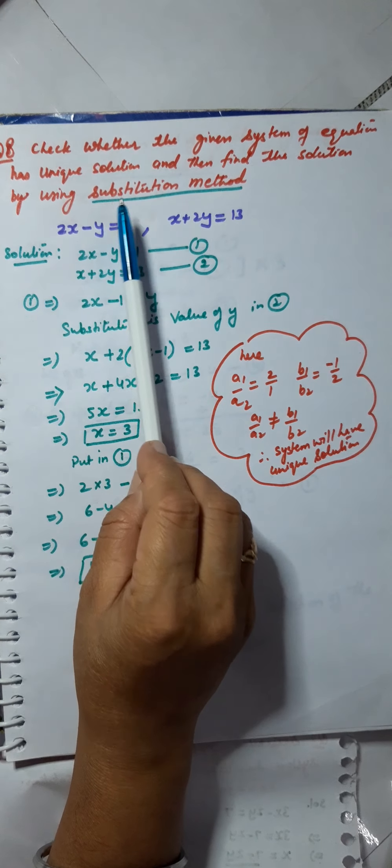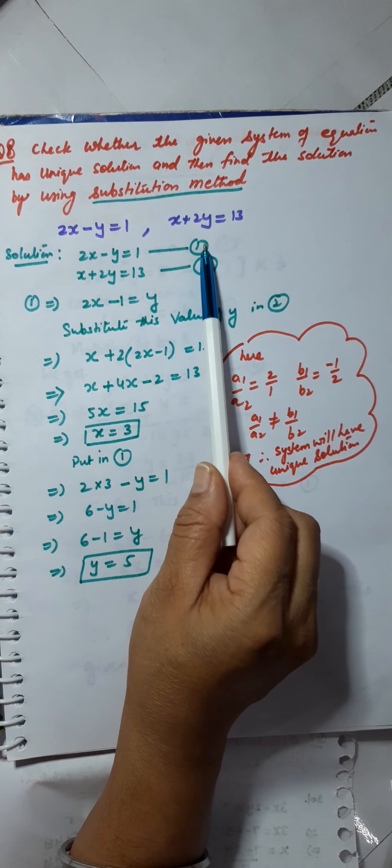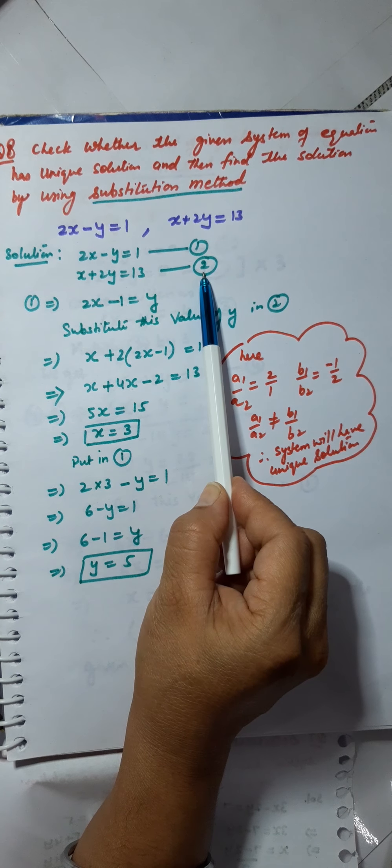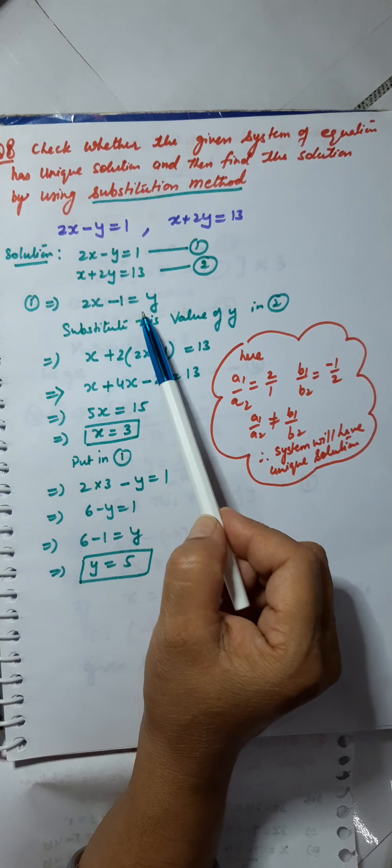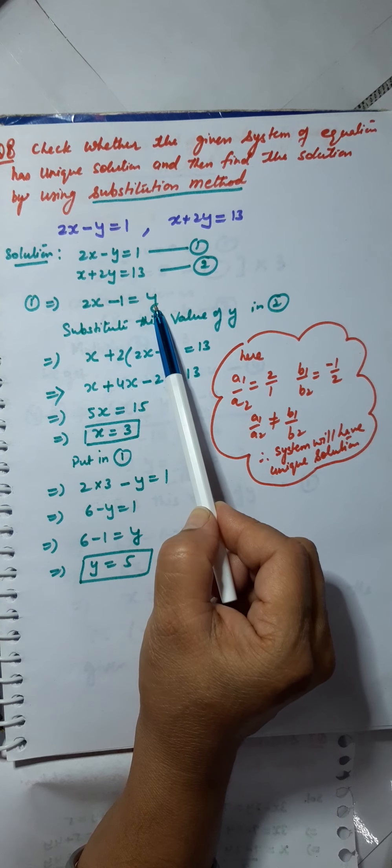Now, what is the method for substitution method? First of all, we number these equations as 1 and number 2. Then, from number 1, I will take out the value of y as 2x minus 1.